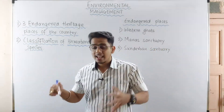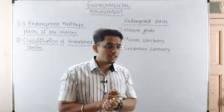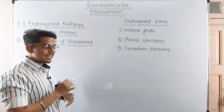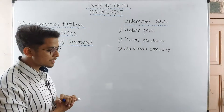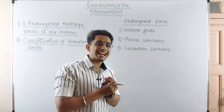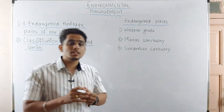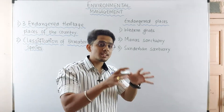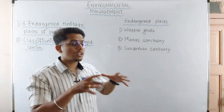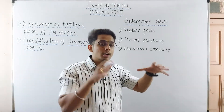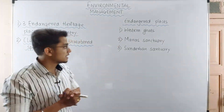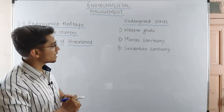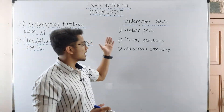The first topic is three endangered heritage places of our country. Basically, what do we mean by endangered places? Endangered places means those places where there is a danger — a possibility of destruction or damage occurring. There are basically three endangered places in the country: the Western Ghats, Manas Sanctuary, and Sundarban Sanctuary.